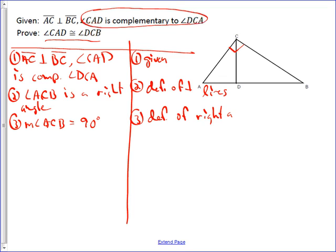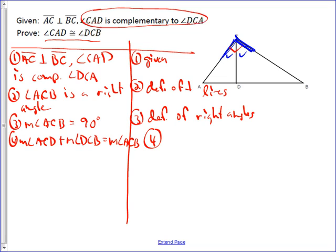So now we know that ACB is a 90 degree angle, but we also know about ACB that the measure of ACD plus the measure of DCB equals the measure of ACB. So we did angle addition to show that this angle plus that angle equals the whole angle. That's what we were doing there. And that's just going to be angle addition postulate.